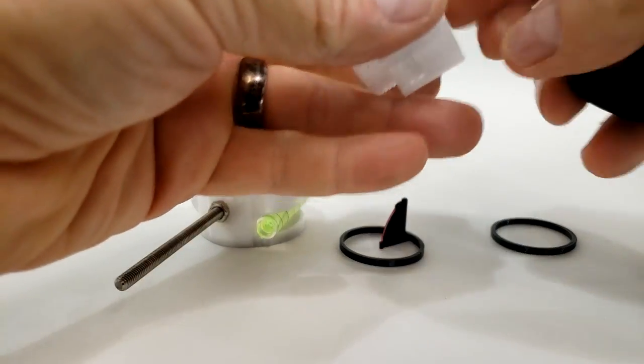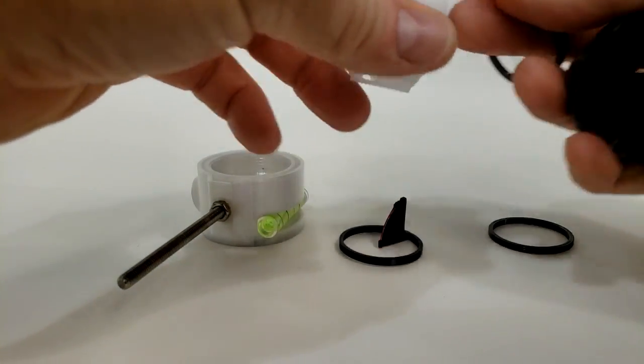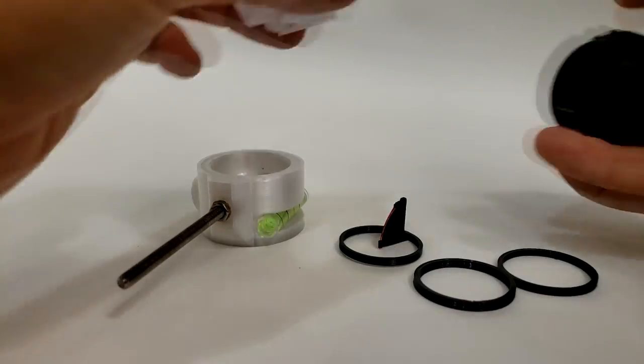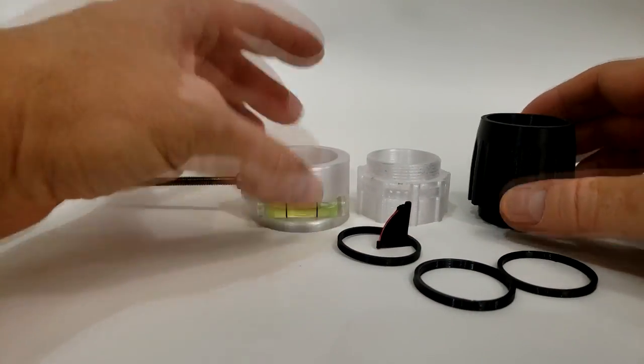You're going to receive both o-rings, a lens, a lens retainer, and a sunshade. So when we break it all down, these are all the parts of the standard scope.